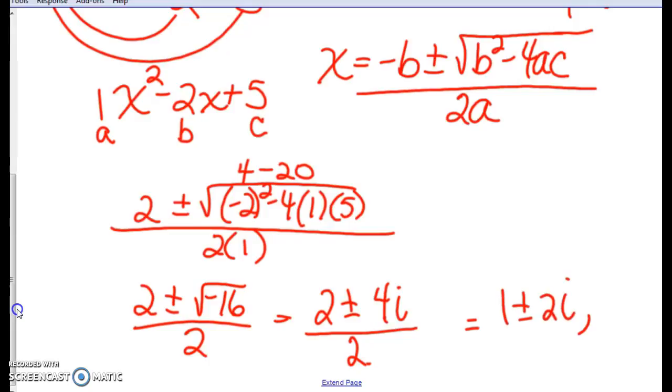And don't forget, way back when, when we first divided, we got negative 4. Those are your solutions. Negative 4 and then 1 plus 2i, 1 minus 2i. Now this i, that means those roots do not cross the x axis. So this one here, we've got three roots. We've got negative 4, 1 plus 2i, 1 minus 2i.